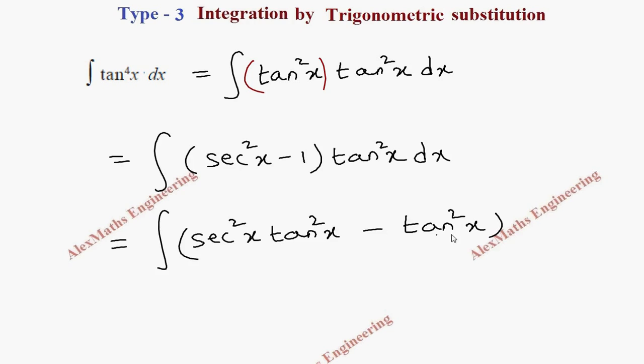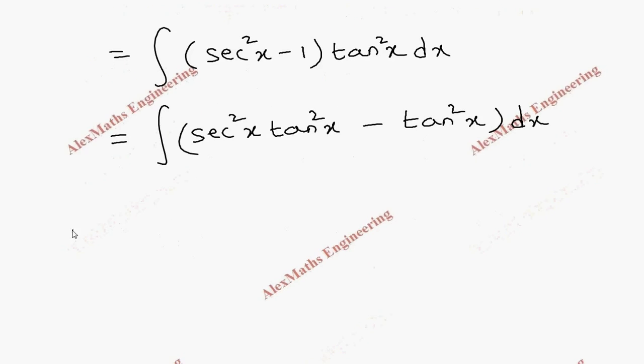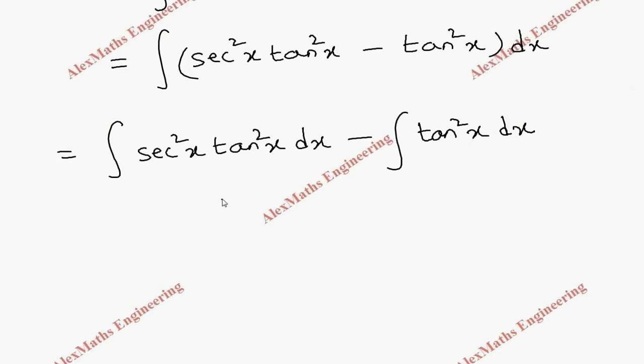Now we are going to split this into two integrations. First term is secant squared x into tan squared x dx minus second term is tan squared x dx. Now we are going to take this as I1 and this as I2.